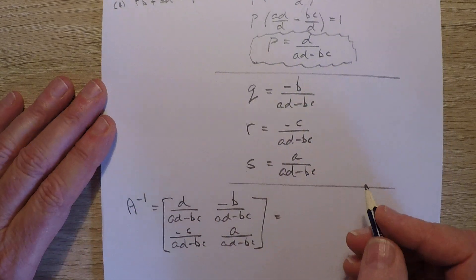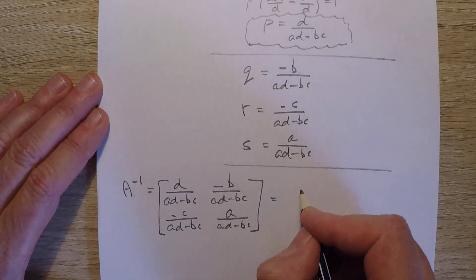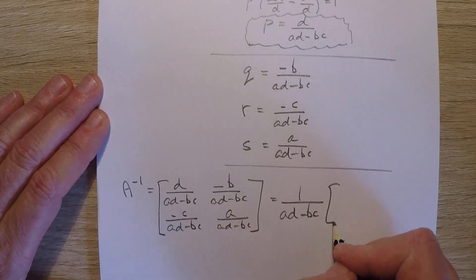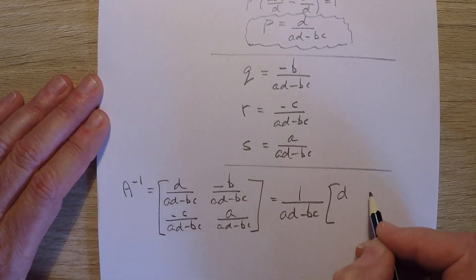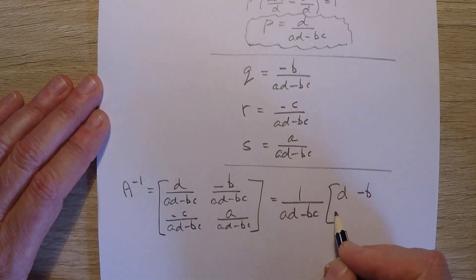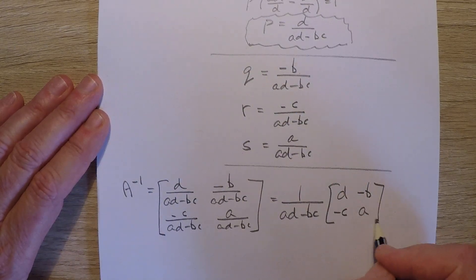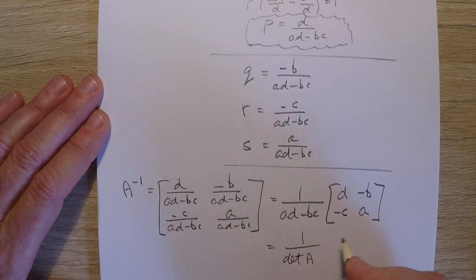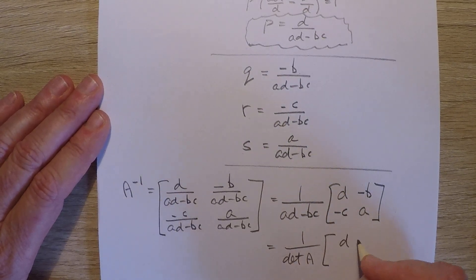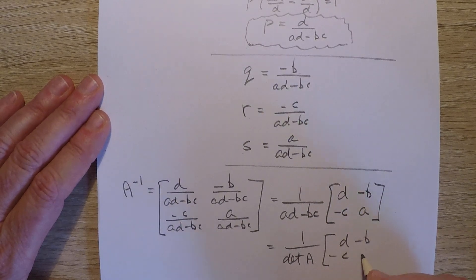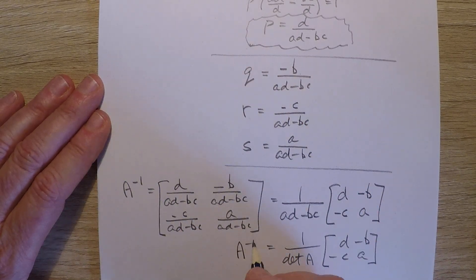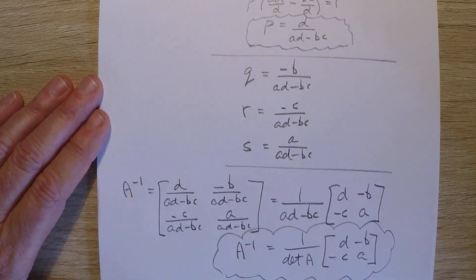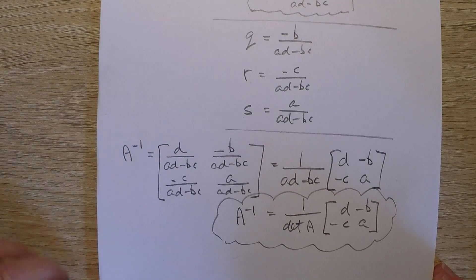Which of course is usually given as 1 over AD minus BC. And then we have D, negative B, negative C, and A. More commonly written as 1 over the determinant of matrix A, times the matrix D, negative B, negative C, A. And that's the rule that you probably would remember to find the inverse of a 2 by 2 matrix.